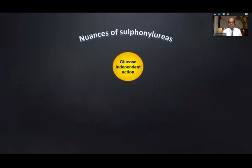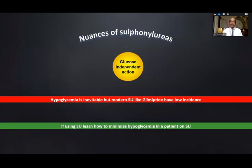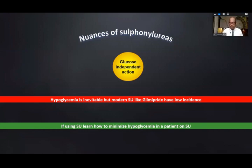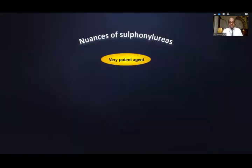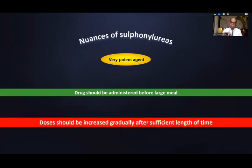The second nuance is that sulfonylureas produce glucose-independent action — their action is not dependent on blood glucose, and therefore hypoglycemia is inevitable. However, modern sulfonylureas like glimipride and gliclazide have a low incidence of hypoglycemia. When using these agents, you must learn how to minimize hypoglycemia to get the optimum benefit. Drugs should be administered before a large meal, and dosage should be increased gradually after sufficient time — do not suddenly increase dosage otherwise it results in hypoglycemia.